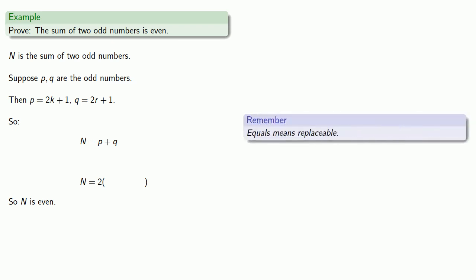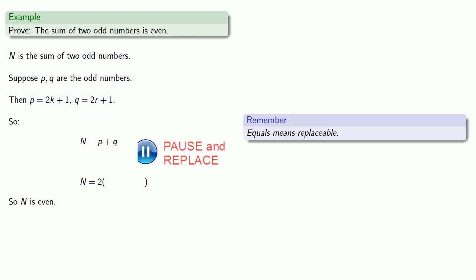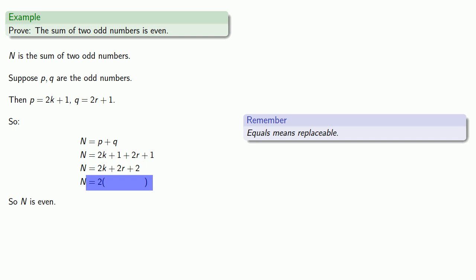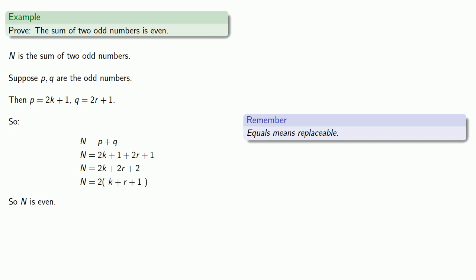We factor out a 2, and there's our proof. We can summarize by writing a conditional where our first line is the antecedent and our last line is the consequent: if n is the sum of two odd numbers, then n is even.